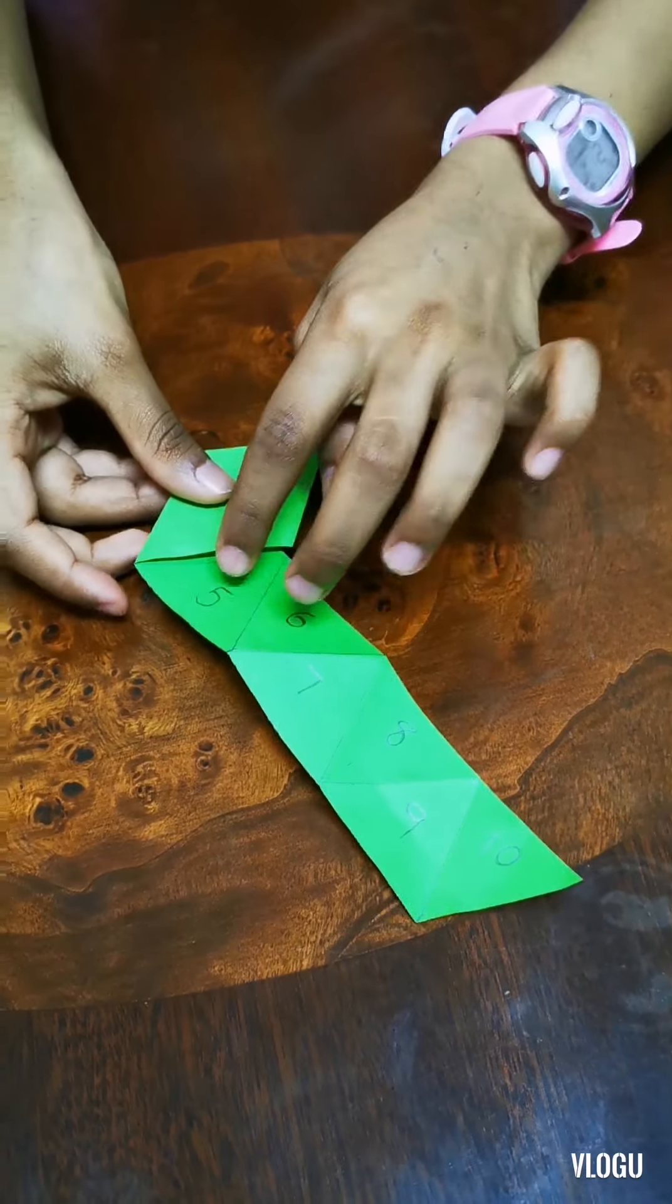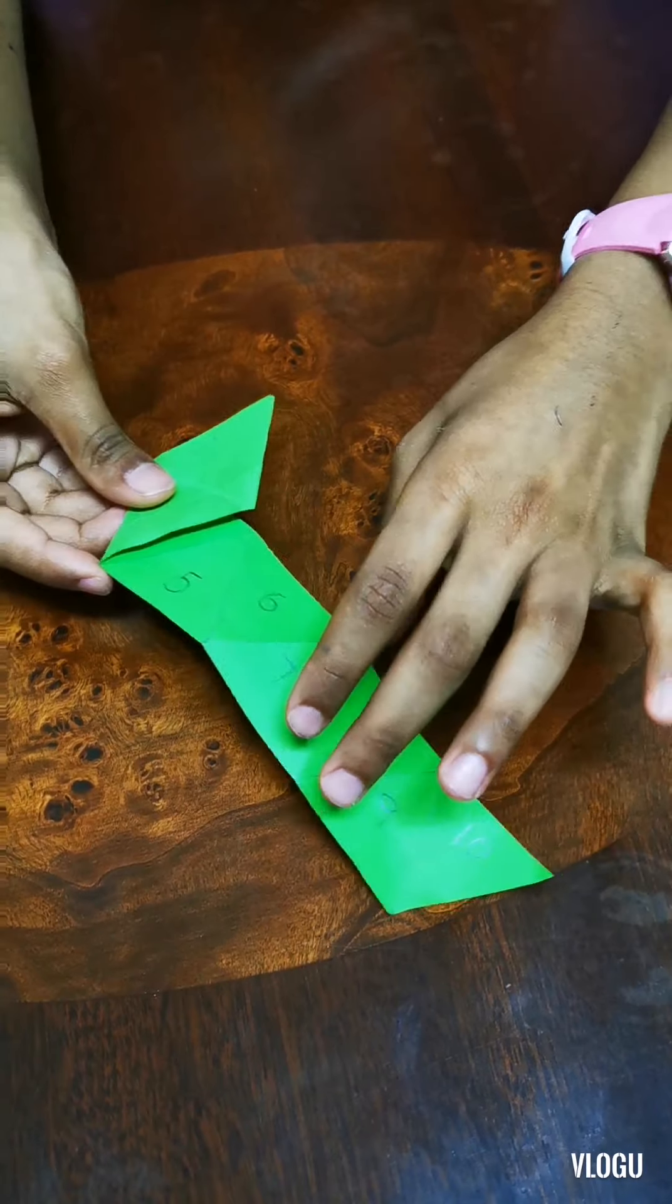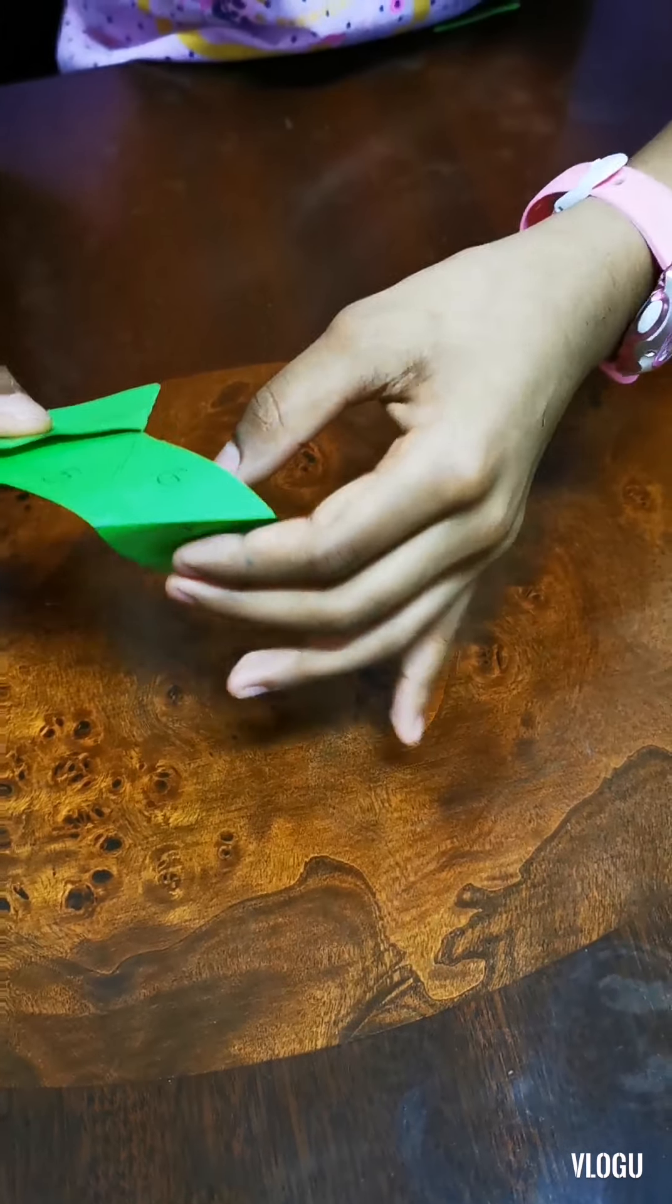Now, we can see 5 and 6. Now, let's turn the number 4 downwards.